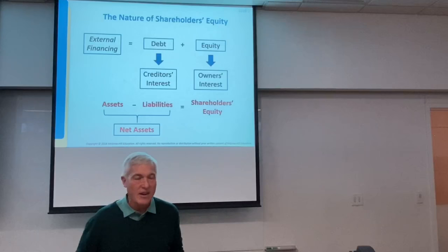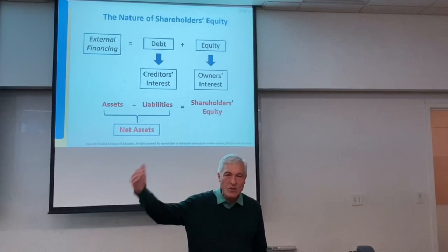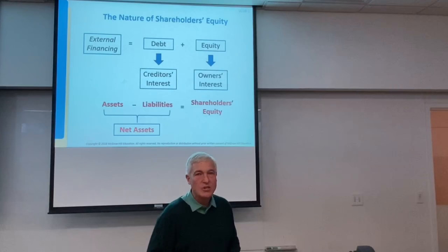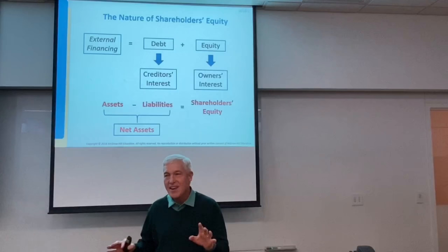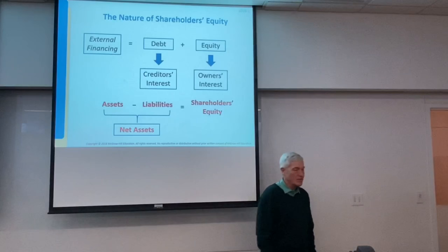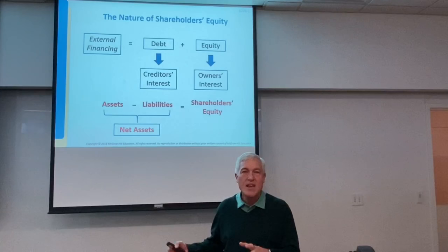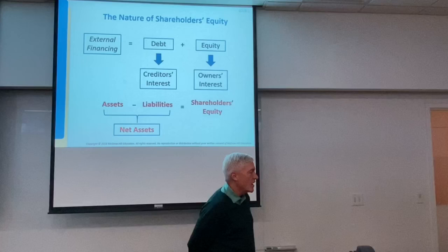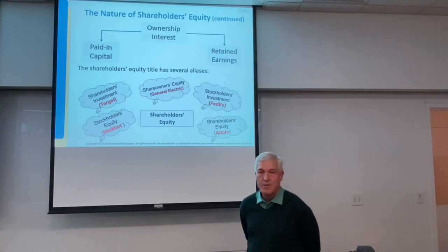Equity holders have skin in the game — they've given an investment because they believe in the company. They have the greatest risk because bondholders are paid first, but if the company takes off and grows tenfold, equity holders will have their proportionate share of that. Owners own the earnings of the company; bondholders do not. If we take assets minus liabilities, what's left is owner's equity — the leftover piece after all the assets minus claims against them.